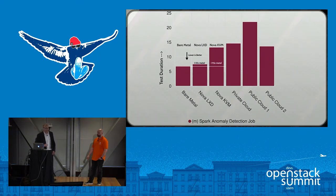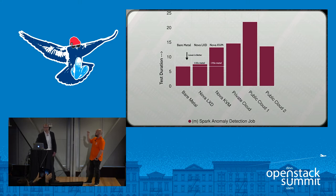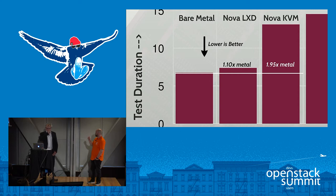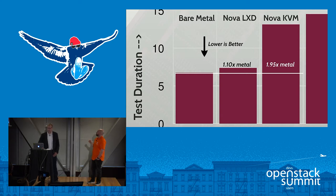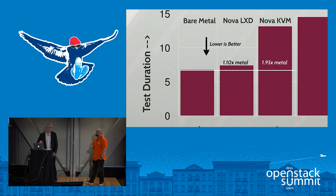When we pool the results together — it looks purple. This first graph shows results from running the Spark anomaly detection job. This is not a raw Spark timer — this is the job time from submitting the job on the command line to job completion, run a minimum of 10 times on each substrate. We found that Nova KVM was almost twice as slow as bare metal compared to 1.1 times for Nova LXD.